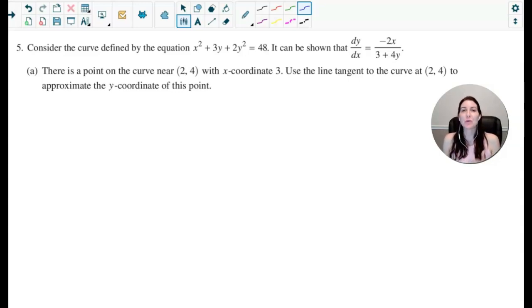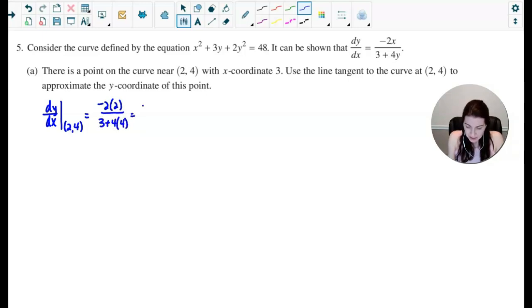So I notice it says use the line tangent to, that means I need to write this in point-slope form. So I need a point and I need a slope. Well, I already have a point, that's the point 2, 4. Now I need to find the slope at that point. So I need to find dy dx at the point 2, 4.